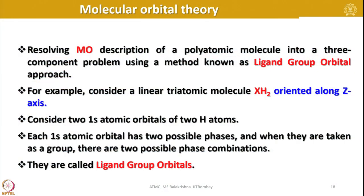As I mentioned in my previous lecture, before I begin using ligand field theory to explain bonding in coordination compounds, let me make you familiar with molecular orbital theory, so that understanding of ligand field theory would be very easy. Here we are resolving the molecular orbital description of a polyatomic molecule into a three-component problem using a method known as the ligand group orbital approach.